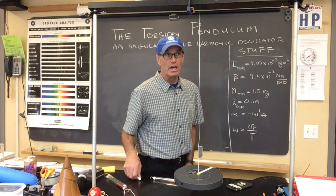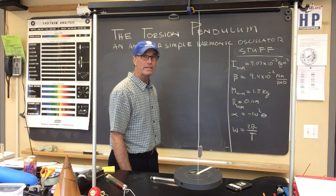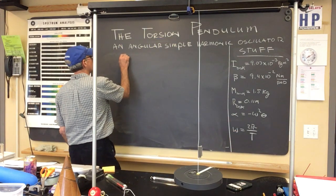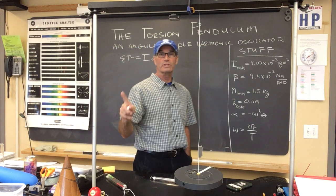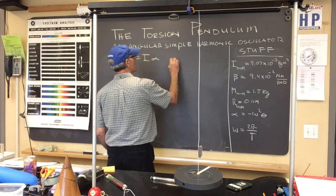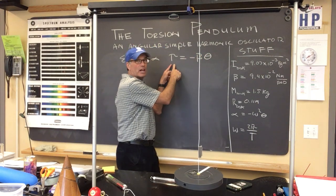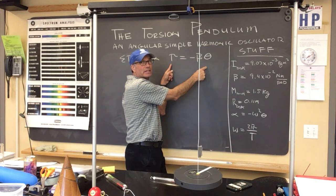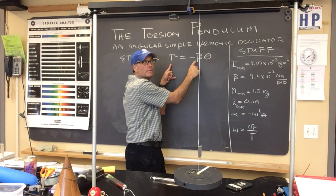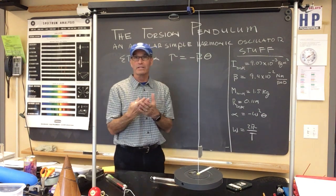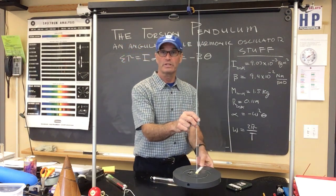Since this is a rotating system, we're going to start with Newton's second law — its angular equivalent: the sum of the torques equals I-alpha. And the angular equivalent to Hooke's law is torque equals minus beta theta. Hooke's law gives restoring force equal to kx; the rotational equivalent is torque equals beta theta, whereby k is the spring constant and beta is the torsion constant for the apparatus.